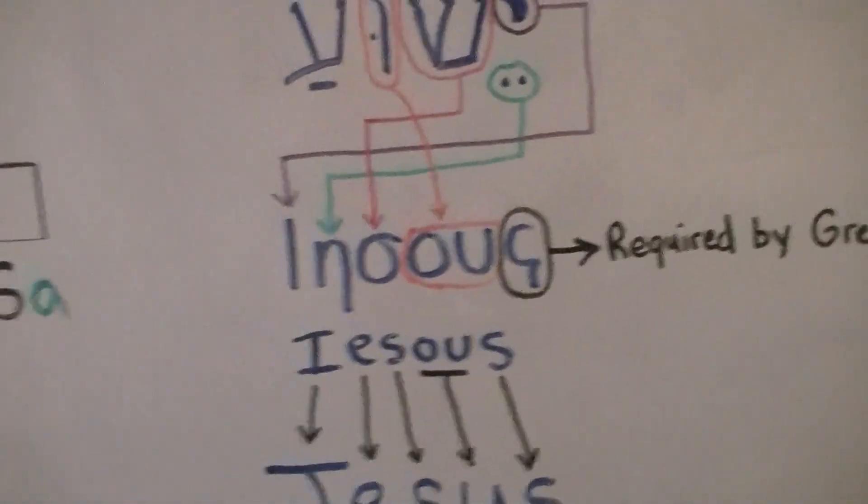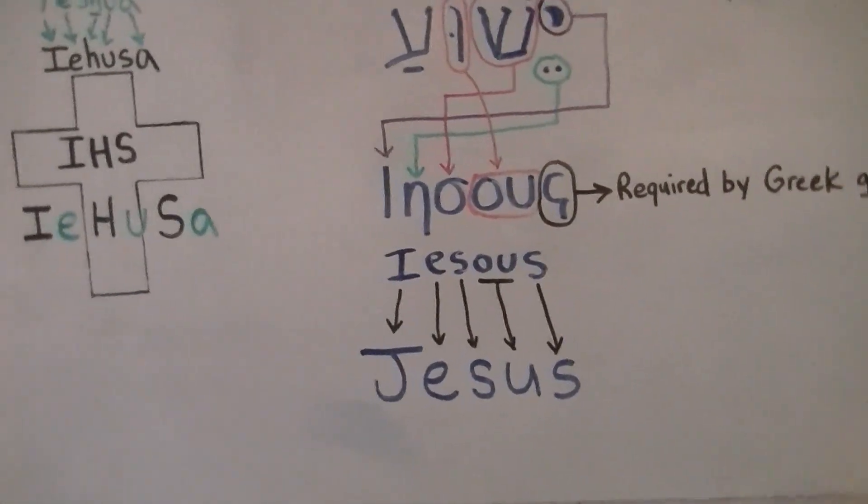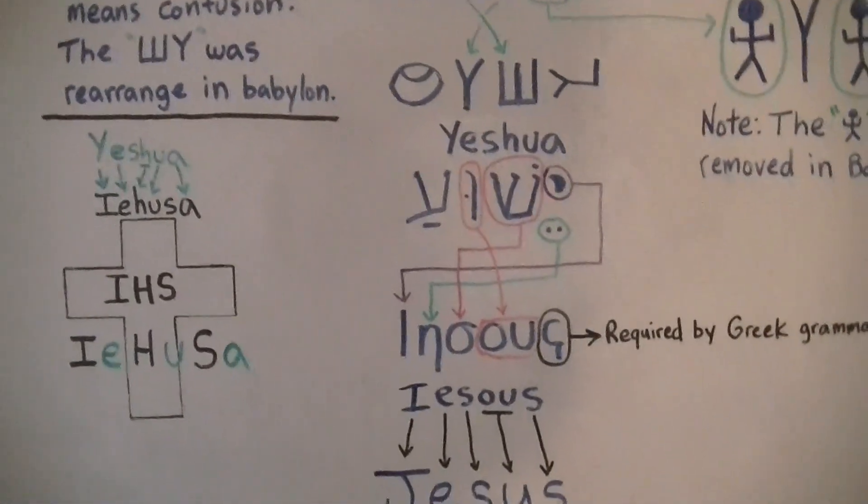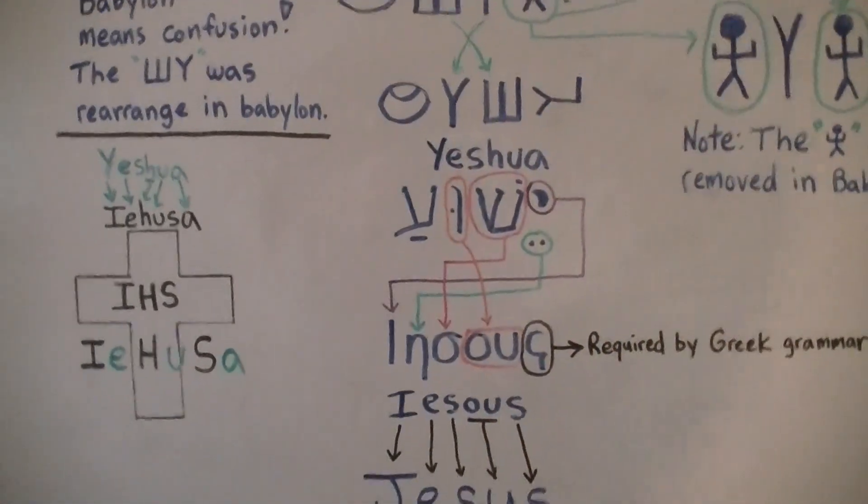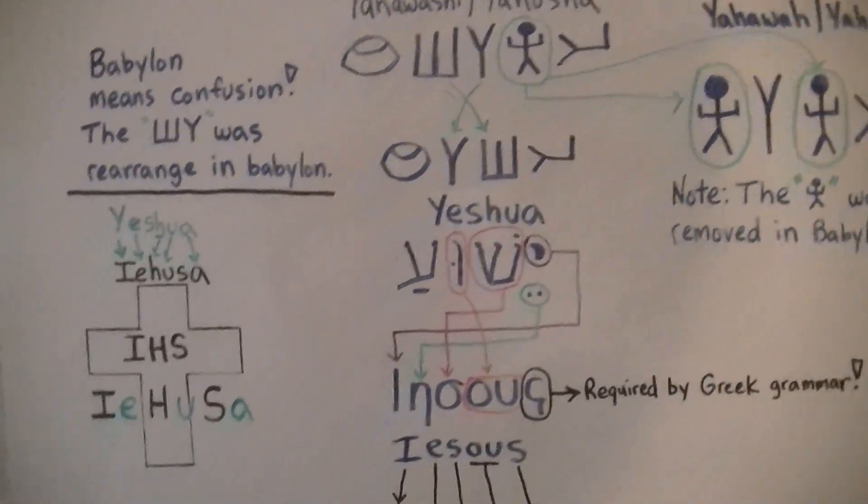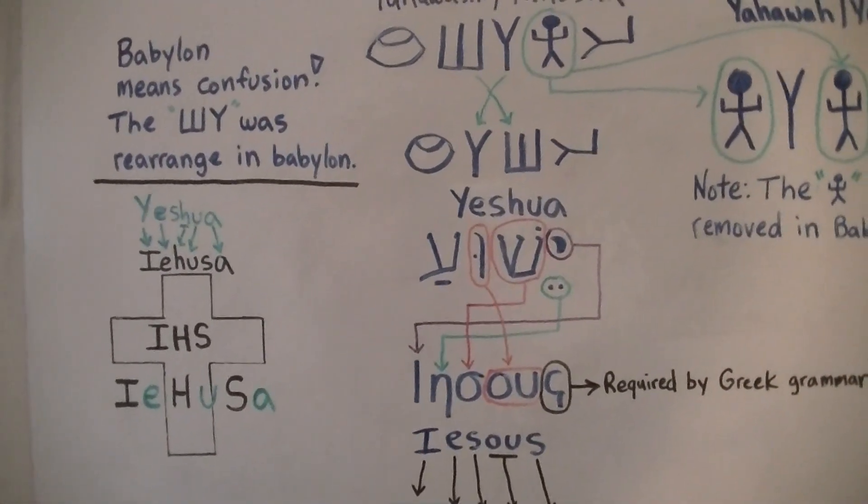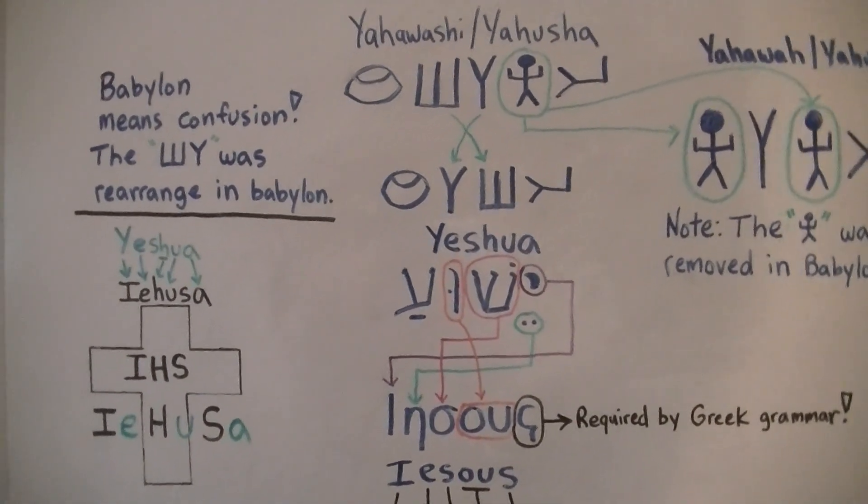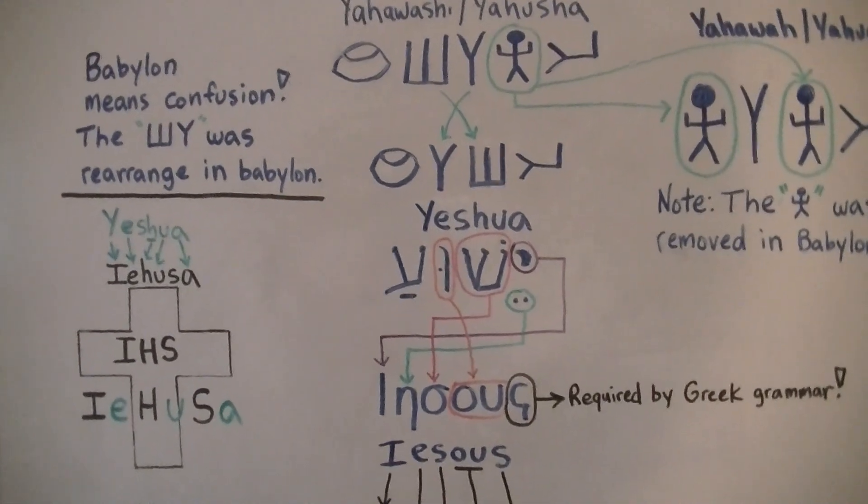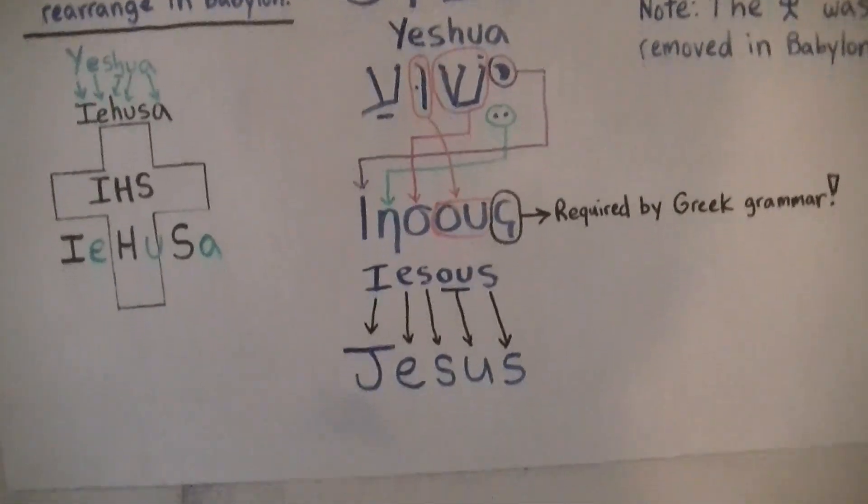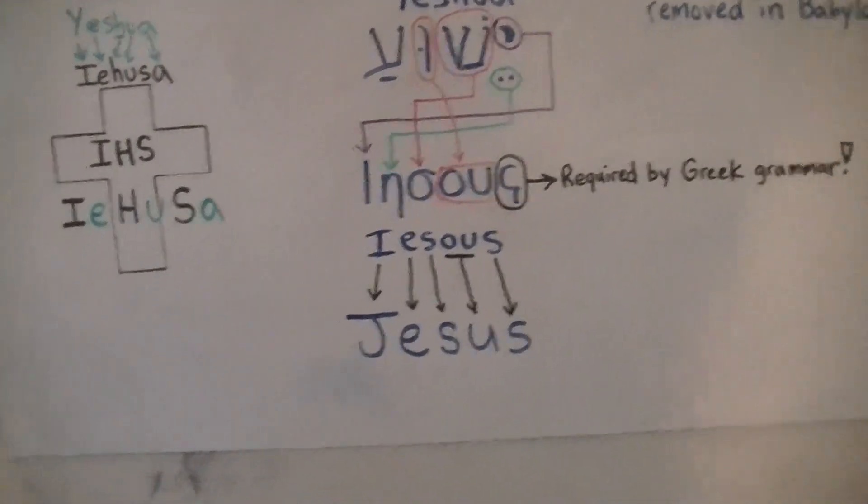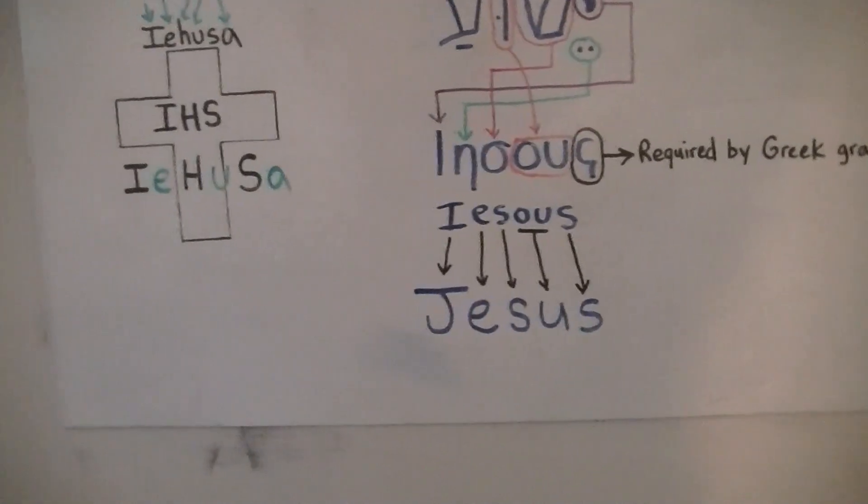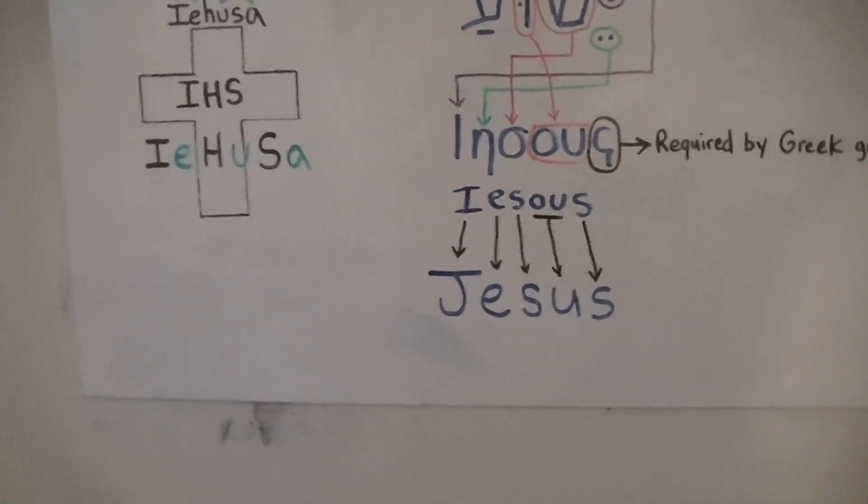So when you know better, you gotta do better, right? And it talks about the gospel will go out to all nations. Remember the Tower of Babel when he confused languages? So the name Jesus is of God, the name Jesus is of Yah, the name Jesus is of Yahuwah, the name Jesus is of Yahweh.